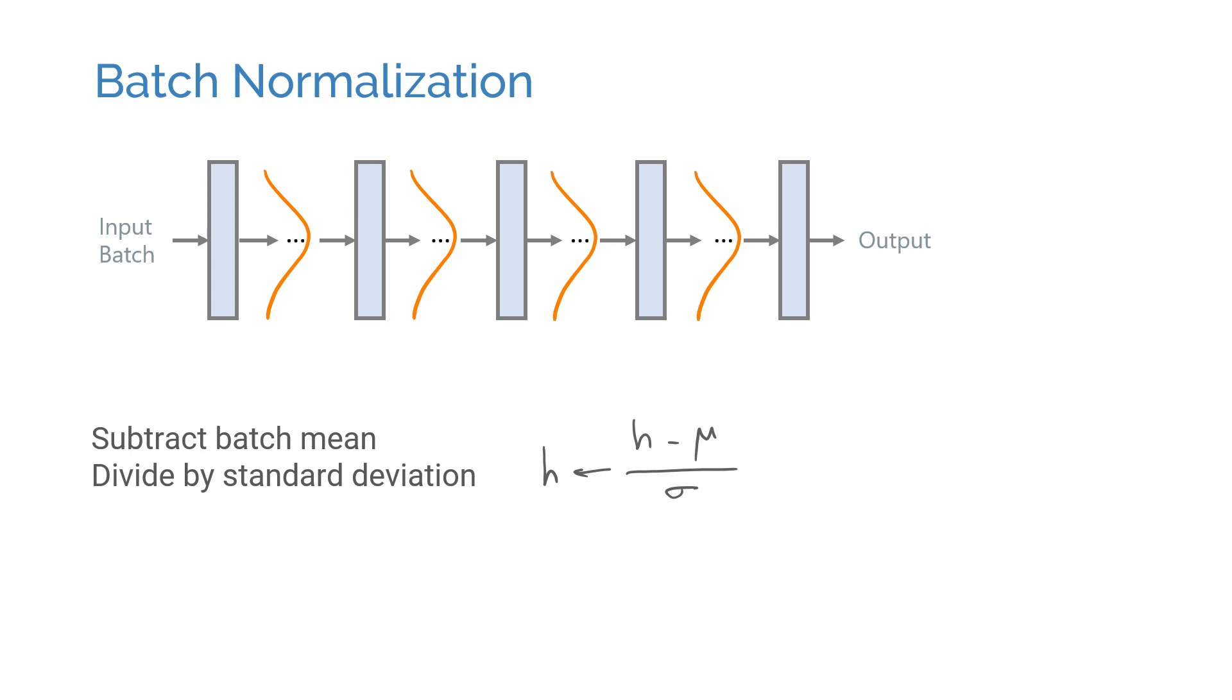The second step uses scaling and shifting parameters to allow the variables to have any mean and standard deviation. These scaling and shifting parameters are trainable and learned during training. Essentially the second step can undo what the first step does. You might ask, what's the point of normalization then?